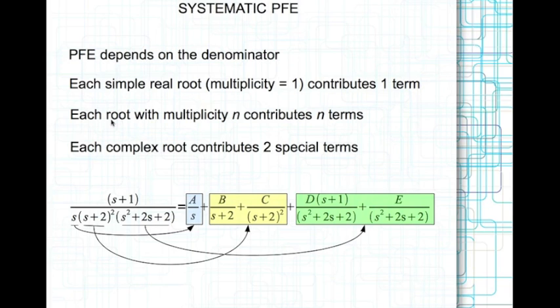Each complex root contributes two special terms. This complex root — actually it's a pair — s squared plus 2s plus 2 contributes this term and this term.